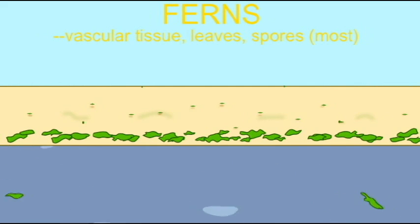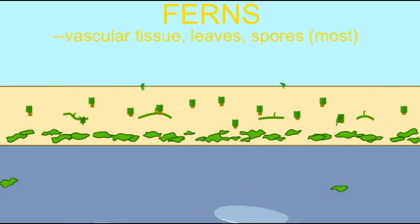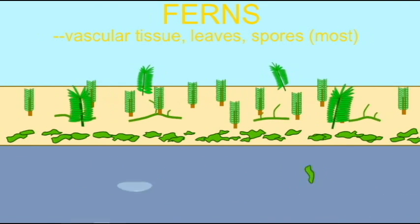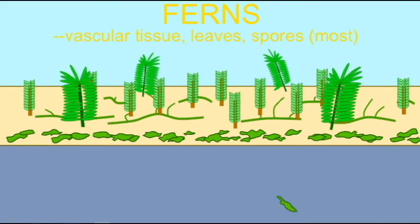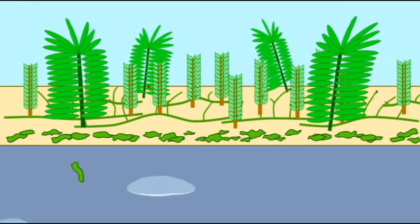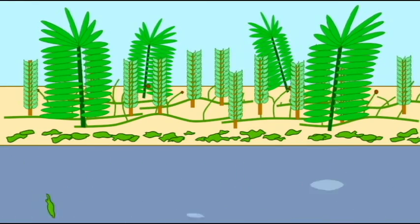Ferns are also primitive plants. They possess vascular tissue and leaves, but the majority of ferns do not possess seeds and reproduce instead by spores. These are an ancient group of plants that are well represented in the fossil record.